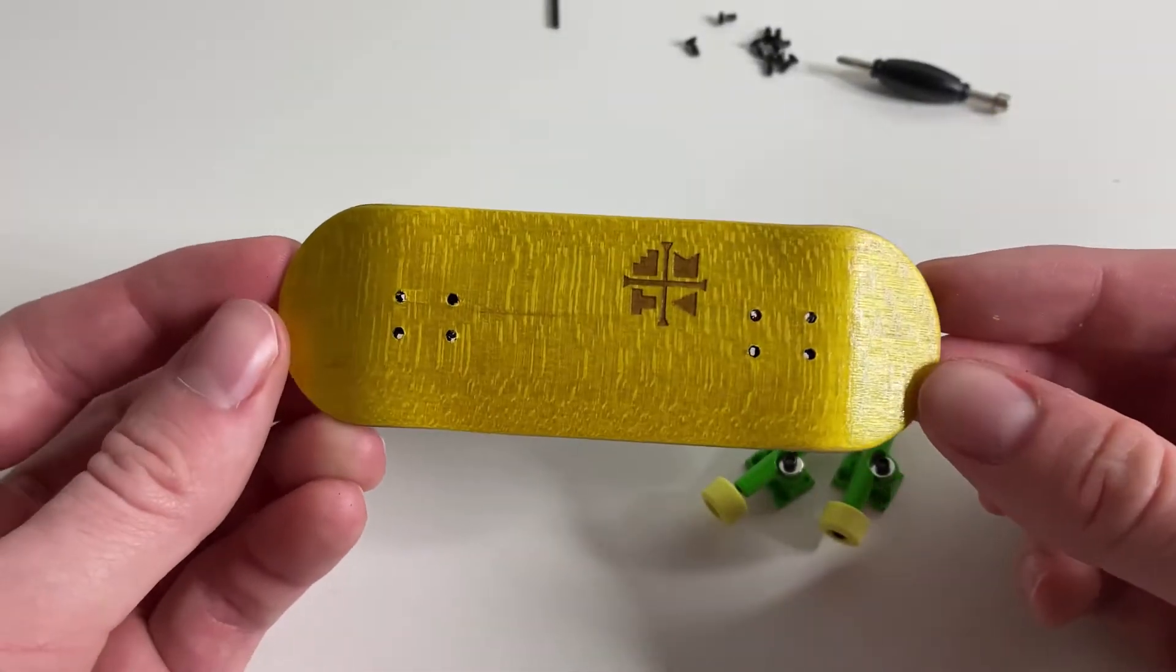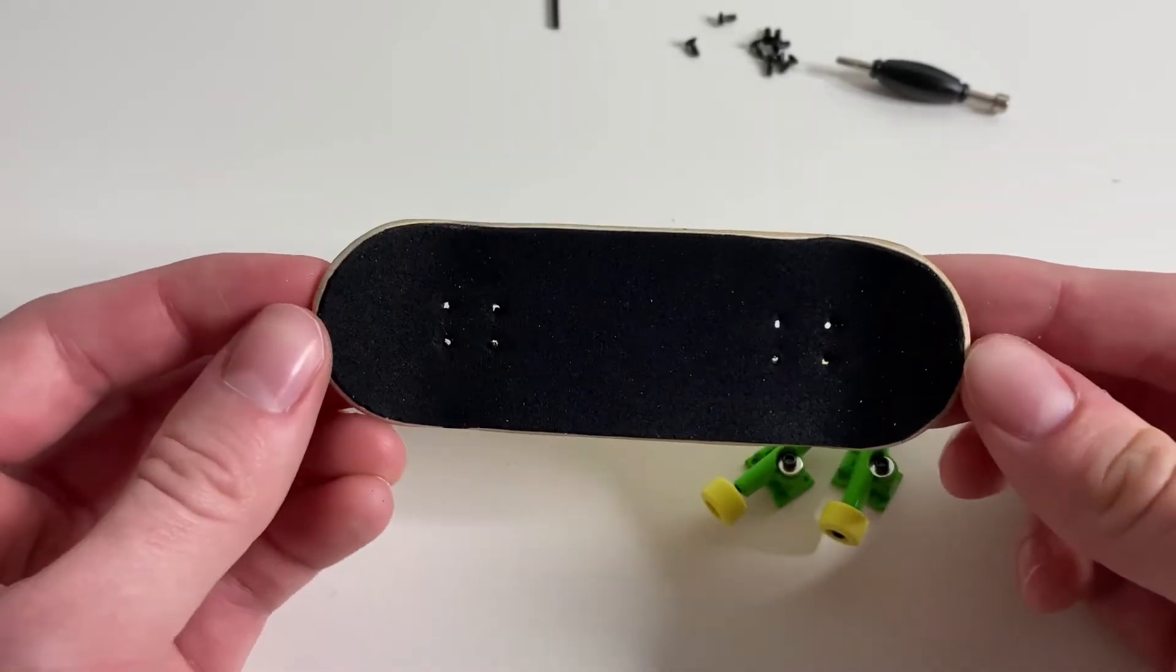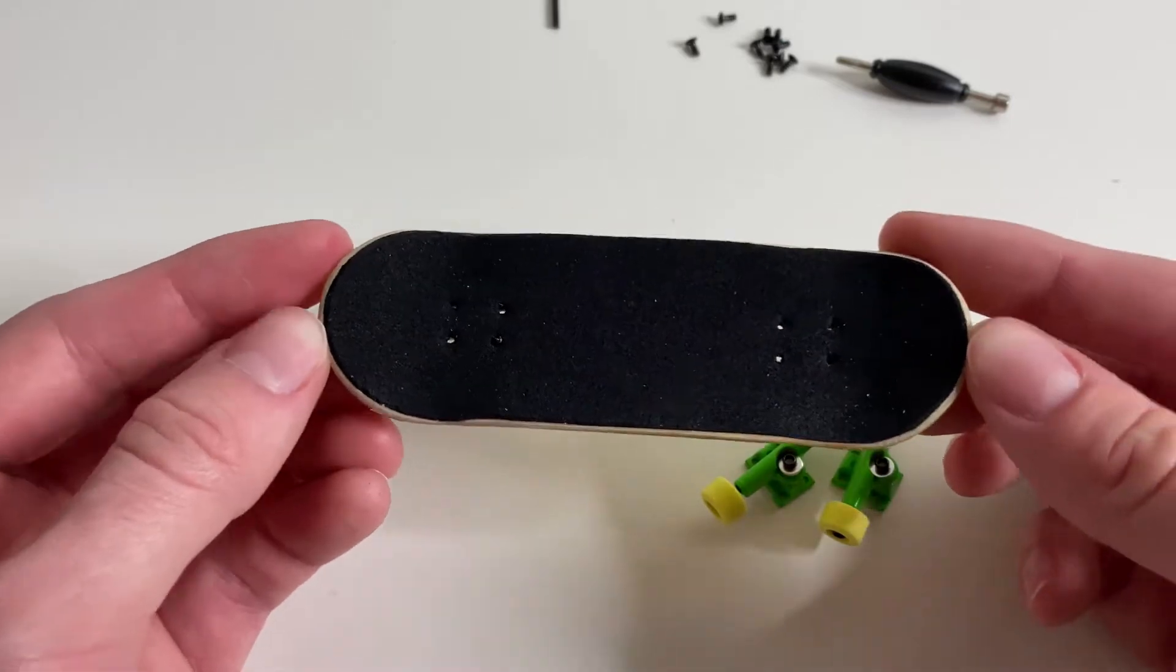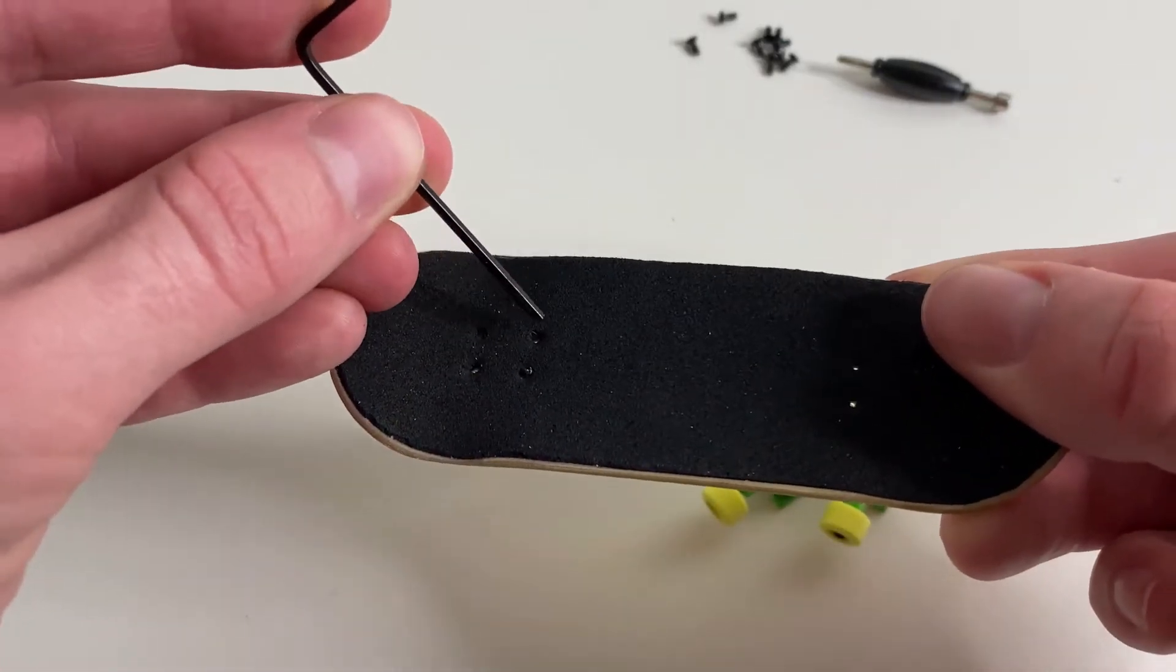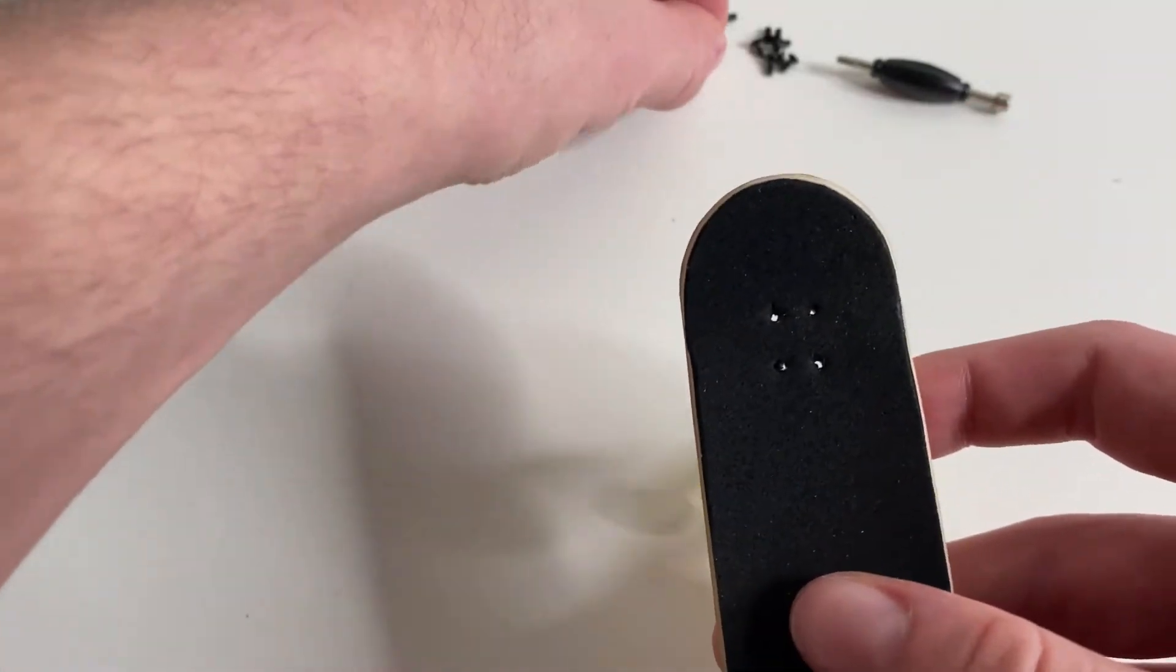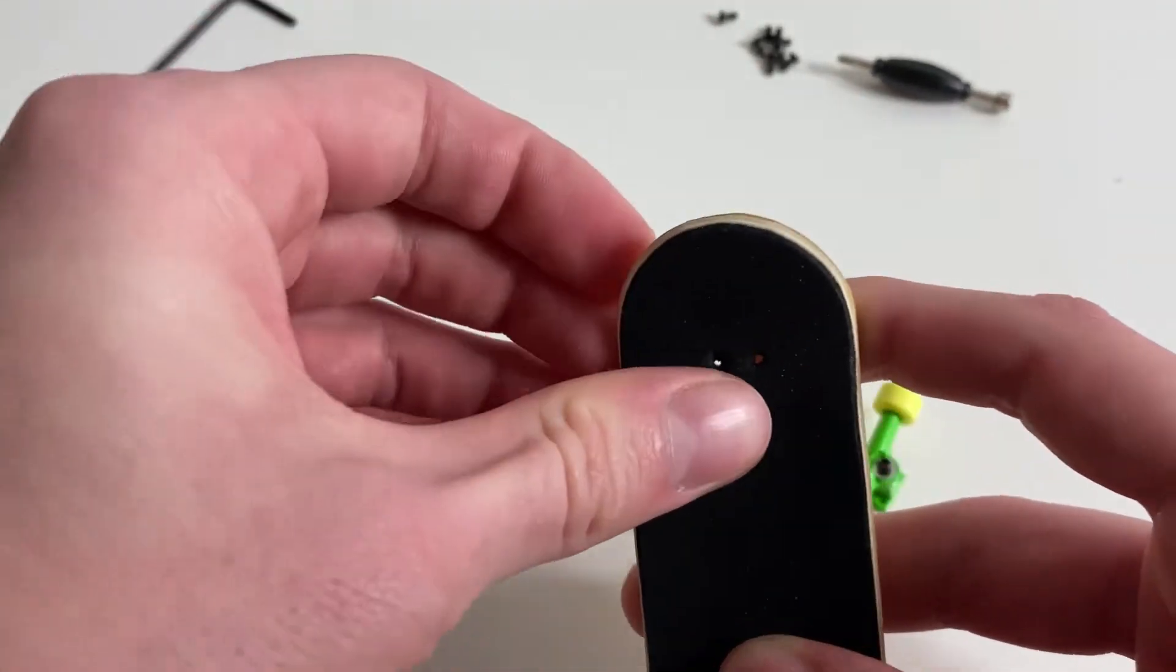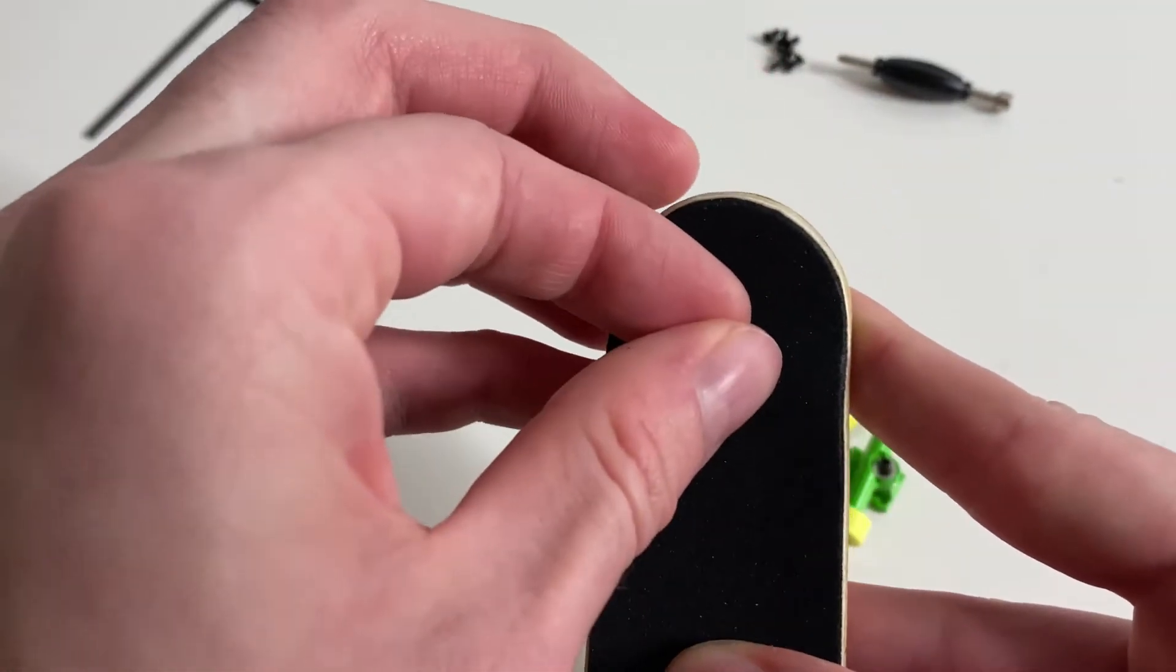Next, you're going to take your fingerboard deck, and if you don't already have holes poked through for the screws, you can do that with your Allen key kingpin tool. Then this is just like a regular fingerboard setup - you're going to put the screws on the top and use the regular tool to screw the trucks in.